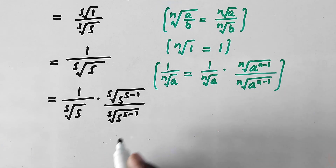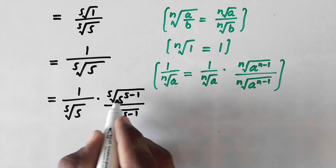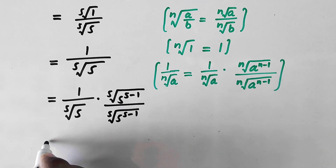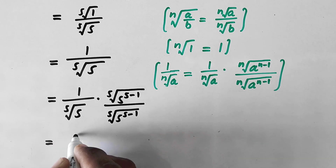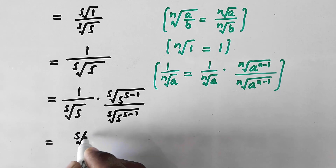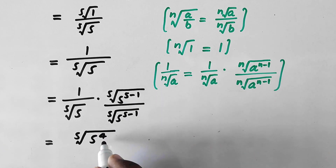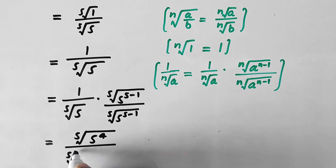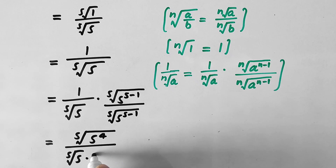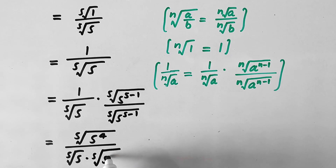Since 5 minus 1 equals 4, the numerator becomes the fifth root of 5^4, and the denominator is the fifth root of 5 times the fifth root of 5^4.